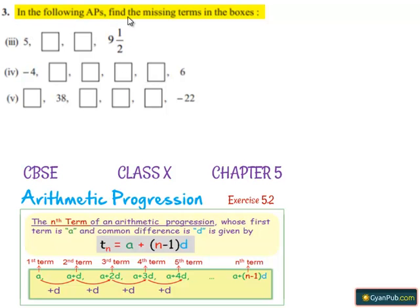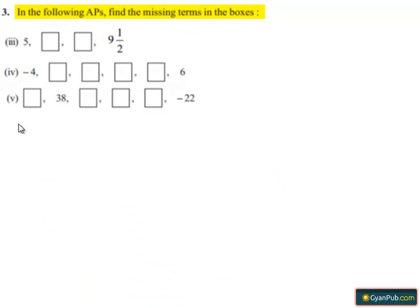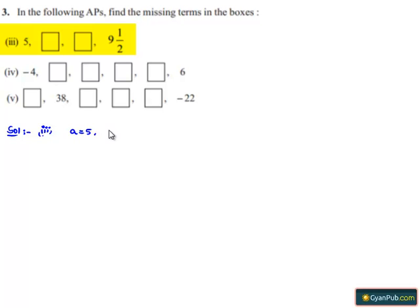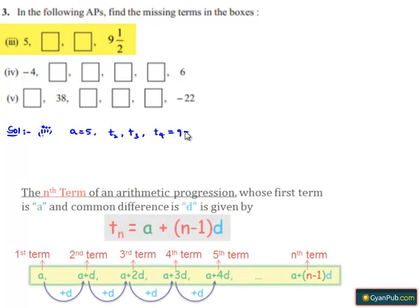Moving on to the third question: in the following arithmetic progressions, find the missing terms in the boxes. Here in the progression, the first term is given as 5, the second and third terms are missing, and the fourth term is given as 9 and 1/2.